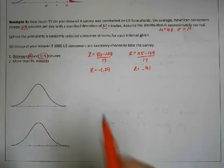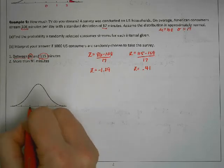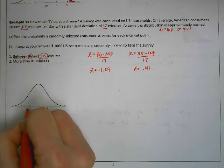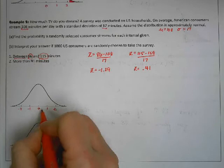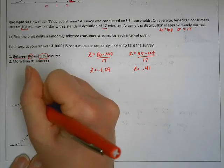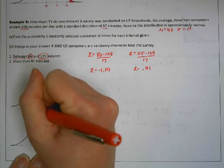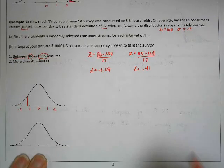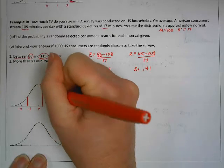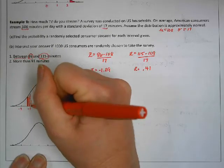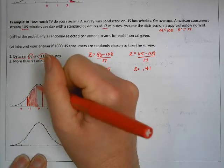So this is 0, 1, 2. Negative 1.29 would be right there, and 0.41 is not quite to half. So shading in between those.